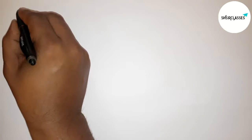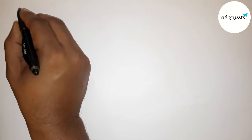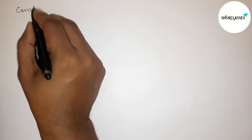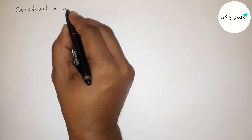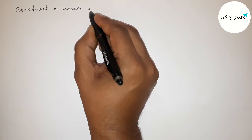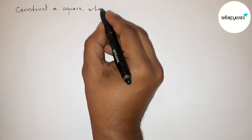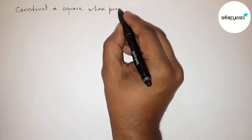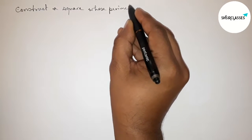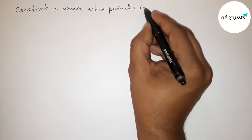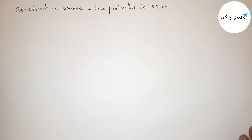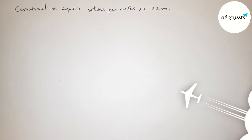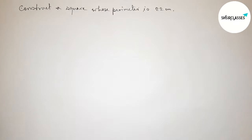Hi everyone, welcome to Essay Share Classes. Today in this video we have to construct a square whose perimeter equals 22 centimeters. Please watch the video till the end. Let's start.